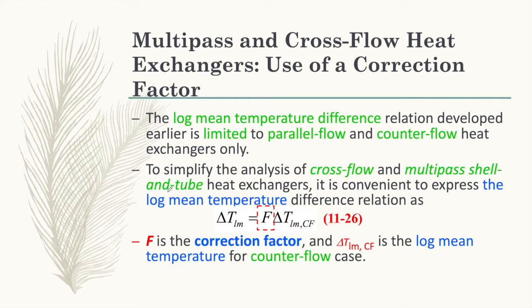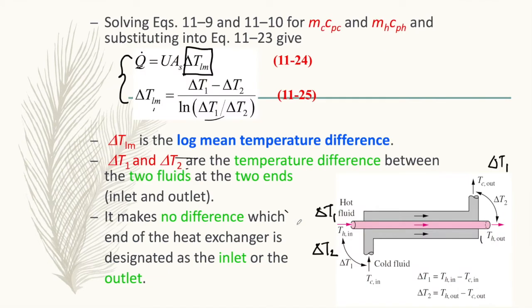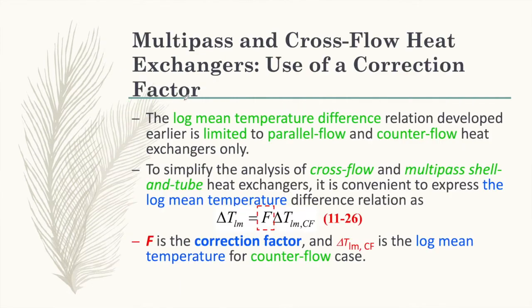Sometimes you may need to solve for a multi-pass or cross flow heat exchanger. When dealing with multi-pass and cross flow, you have to add a correction factor F to correct the value of delta_T_lm. So the equation becomes Q-dot equals U·A_s·F·delta_T_lm,CF, where F is a correction factor and delta_T_lm,CF is calculated using the same base equation.